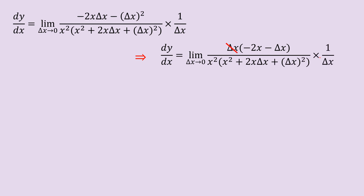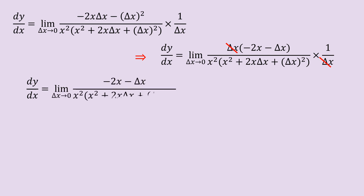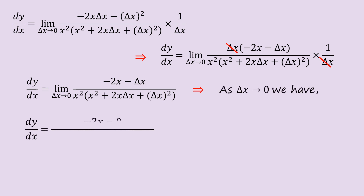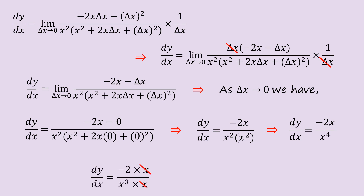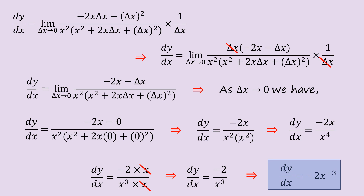After dividing, we replace Δx with 0, since Δx → 0. Simplifying further, we get −2x divided by x² · x², which gives −2/x³. So that is our answer — or you can express it further as −2x^(−3).